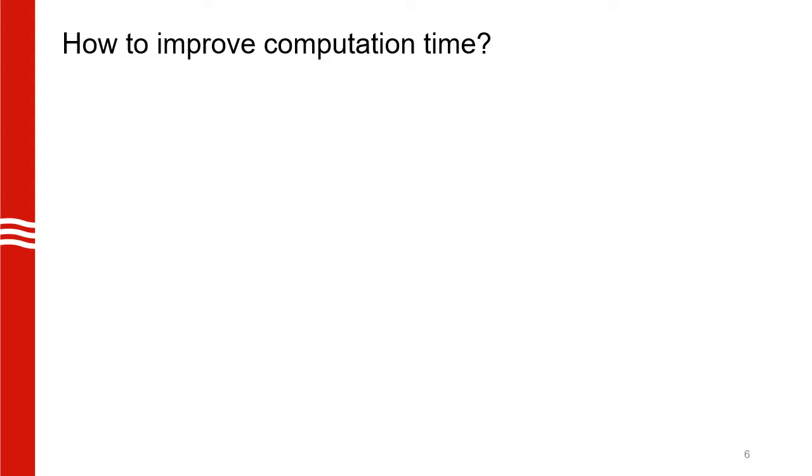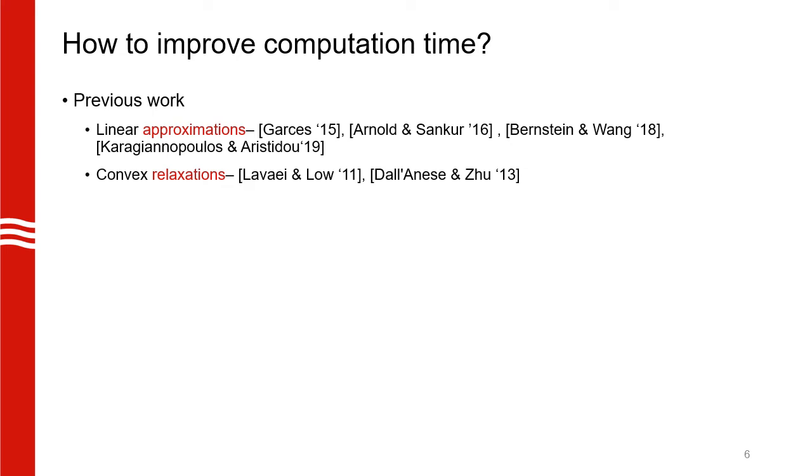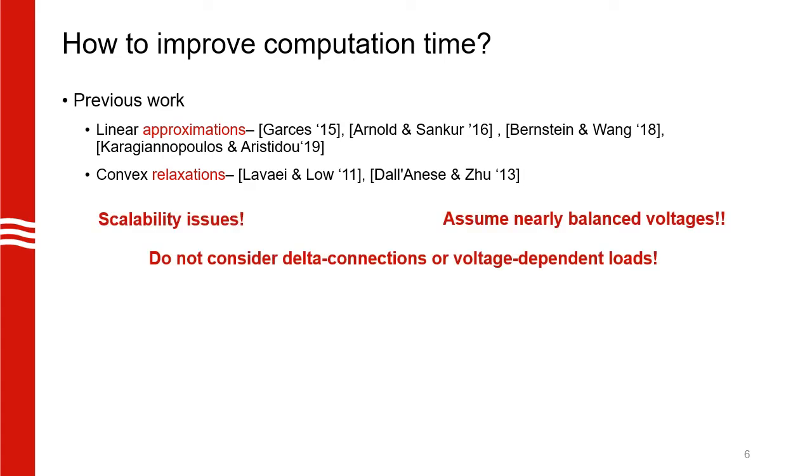So, the research question we want to address now is, how do we solve the OPF faster? There is already some existing work in this area, where several approximations and relaxations have been used to improve computation time. However, there are some issues. For example, some of the relaxations are unable to find an AC feasible solution and they also do not scale well for large systems. They are also not flexible enough to consider delta connections or voltage dependent loads in the network. More importantly, several of these existing methods make limiting assumptions on the balanced nature of the grid, which makes them unsuitable to analyze voltage unbalance.